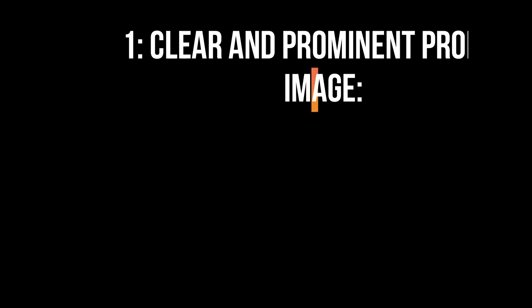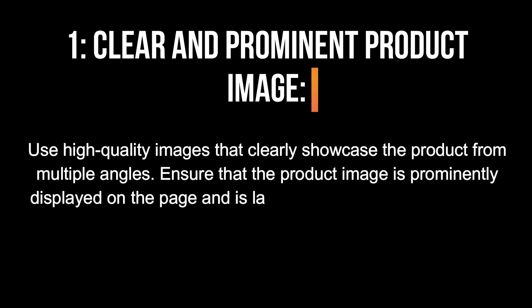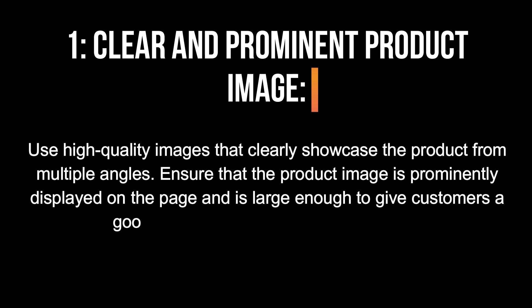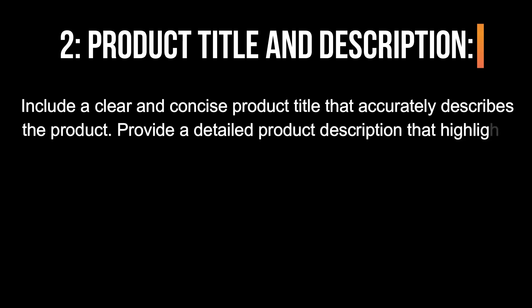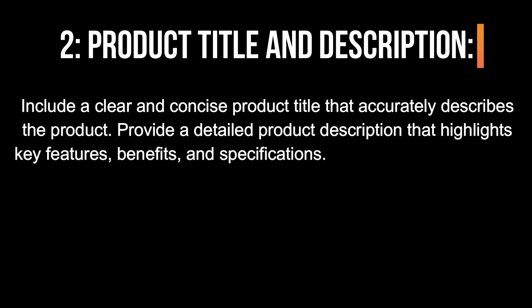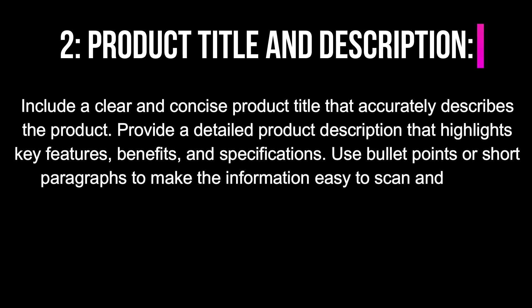1. Clear and Prominent Product Image. Use high-quality images that clearly showcase the product from multiple angles. Ensure that the product image is prominently displayed on the page and is large enough to give customers a good visual representation of the product. 2. Product Title and Description. Include a clear and concise product title that accurately describes the product. Provide a detailed product description that highlights key features, benefits, and specifications. Use bullet points or short paragraphs to make the information easy to scan and digest.